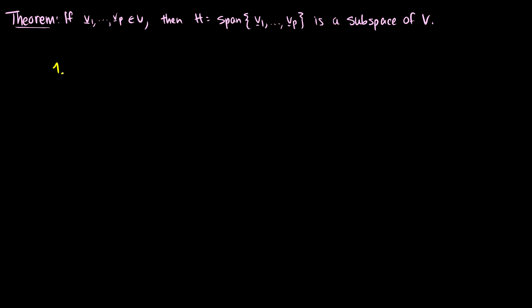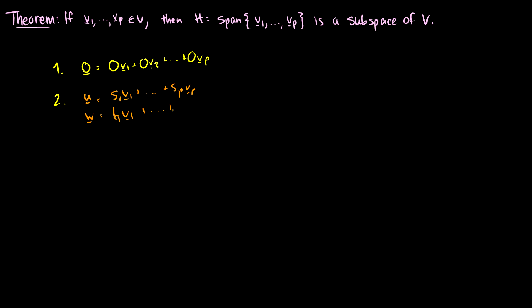We have to show the three conditions. For the first one, zero equals 0·V1 plus 0·V2 all the way up to 0·Vp, so that's fine. For number two, we take U equal to S1·V1 up to Sp·Vp, and W equal to T1·V1 up to Tp·Vp.